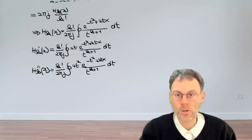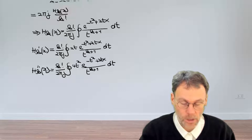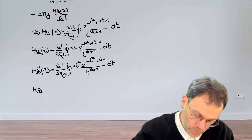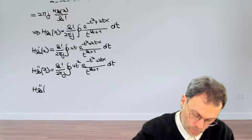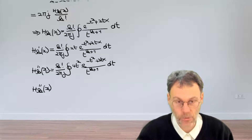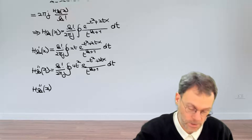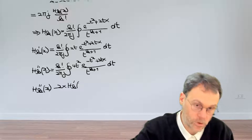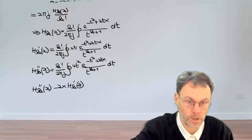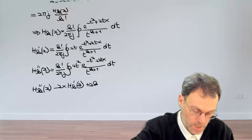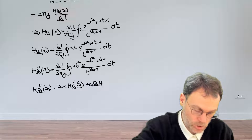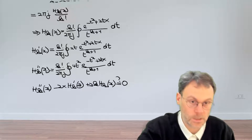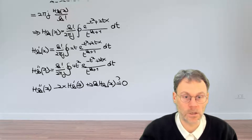Now we are armed with all the ingredients to substitute into the Hermite differential equation, which reads H_k''(x) minus 2x H_k'(x) plus 2k H_k(x), and hopefully this gives us zero.